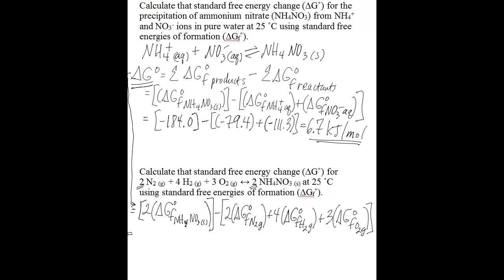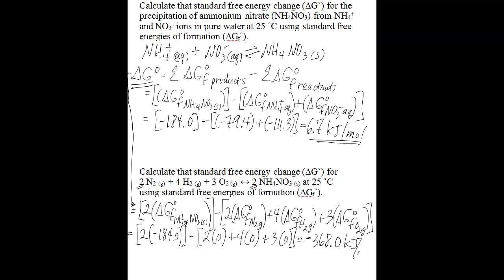You look up all of those values in a table, and what you'll have is 2 times negative 184.0, minus the quantity 2 times 0, plus 4 times 0, plus 3 times 0. When you do the math, you'll be left with negative 368.0 kilojoules per mole.